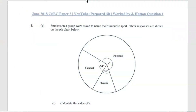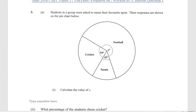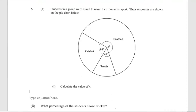We're now at question 5, June 2018 for Mathematics Paper 2. Students in a group were asked to name their favorite sport, and their responses are shown on the pie chart below. It says calculate the value of X. The circle is split into three between football, tennis, and cricket. Cricket is 94 degrees, tennis is 45 degrees, and football is X degrees.